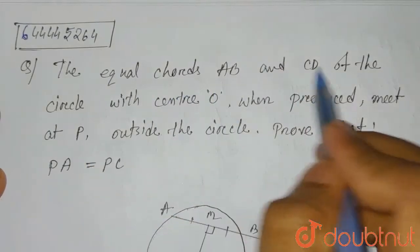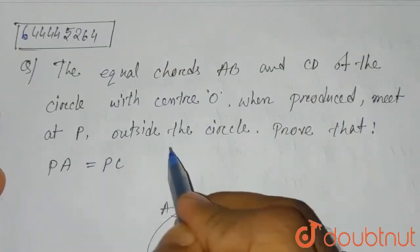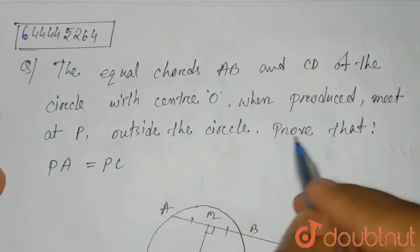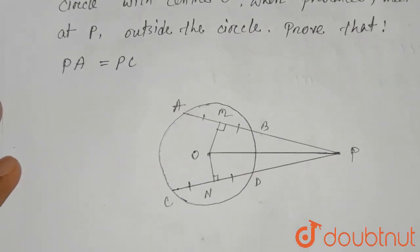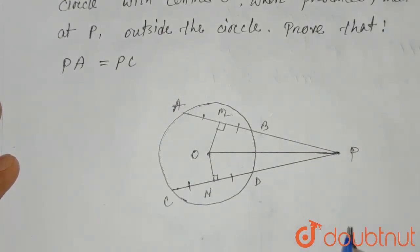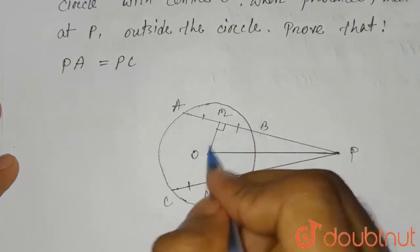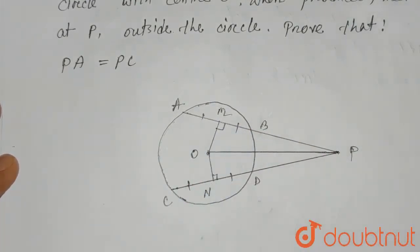Hello everyone. The question is: equal chords AB and CD of a circle with center O, when produced, meet at P outside the circle. Prove that PA equals PC. This is a diagram where chords AB and CD are equal, they are produced up to P outside the circle, and O is the center of the circle.